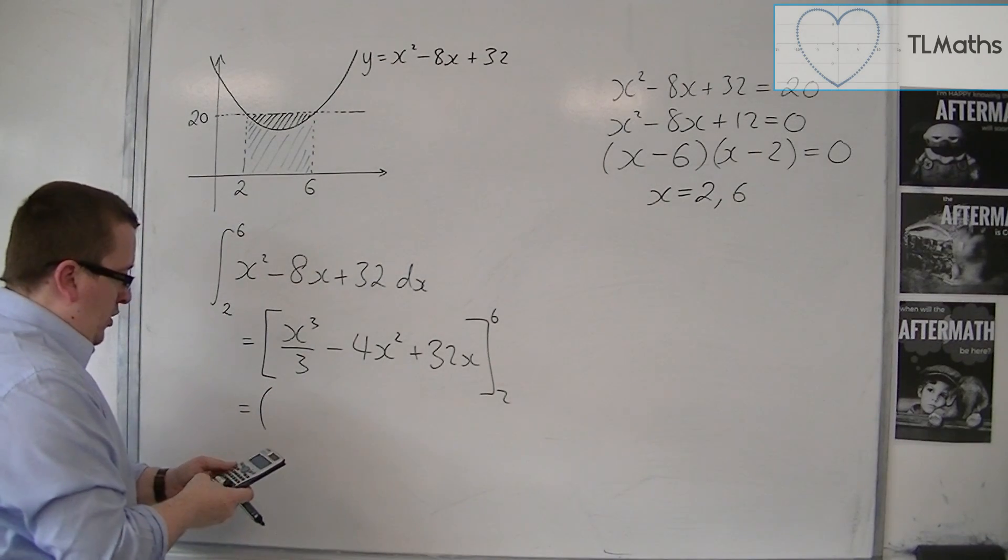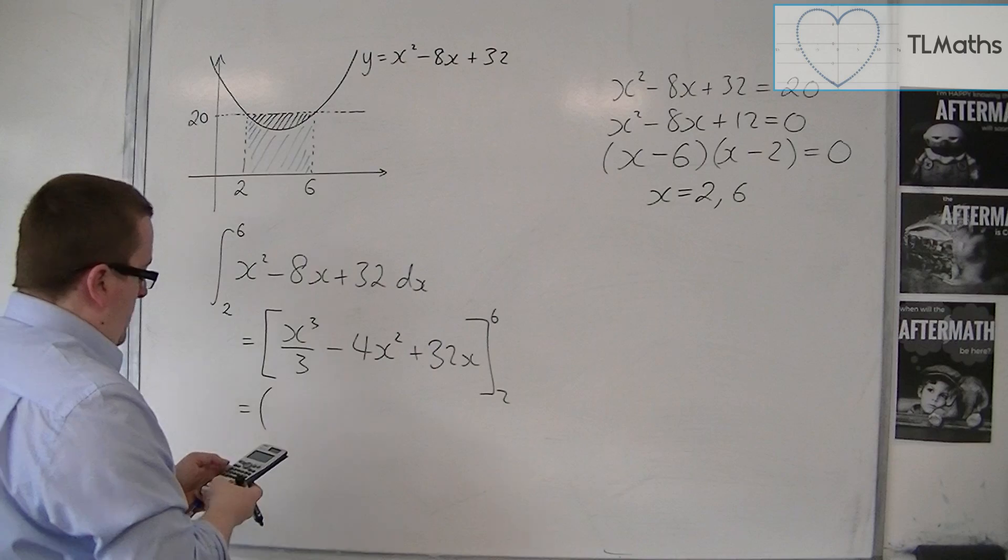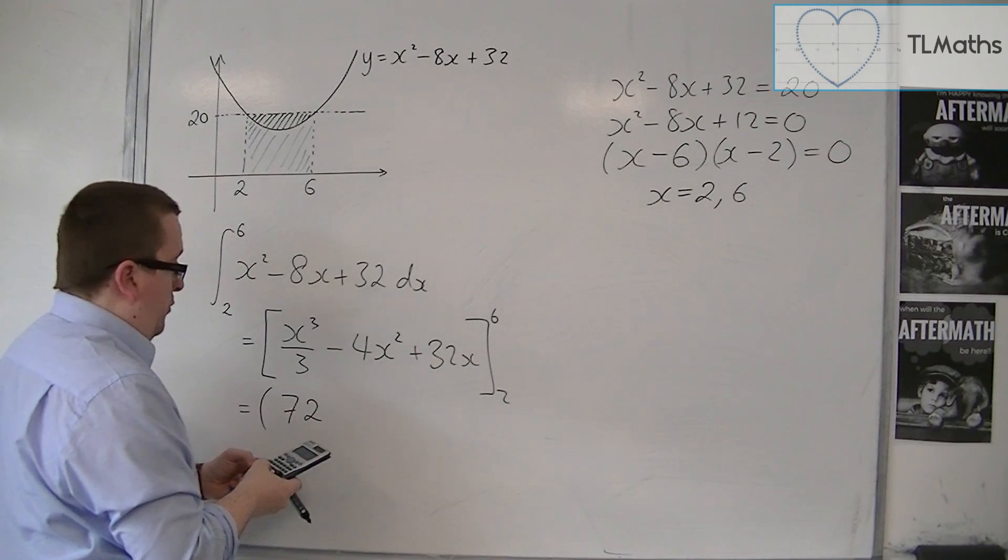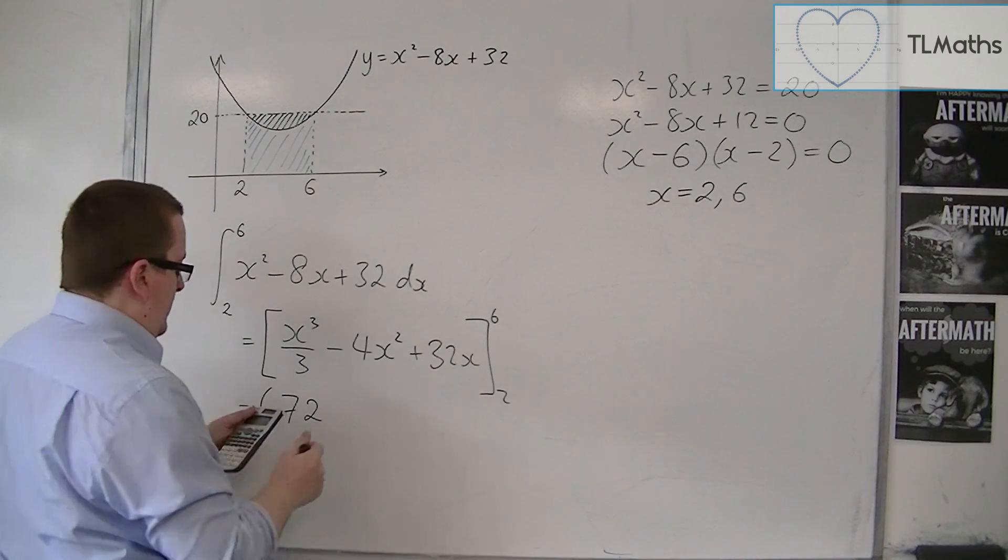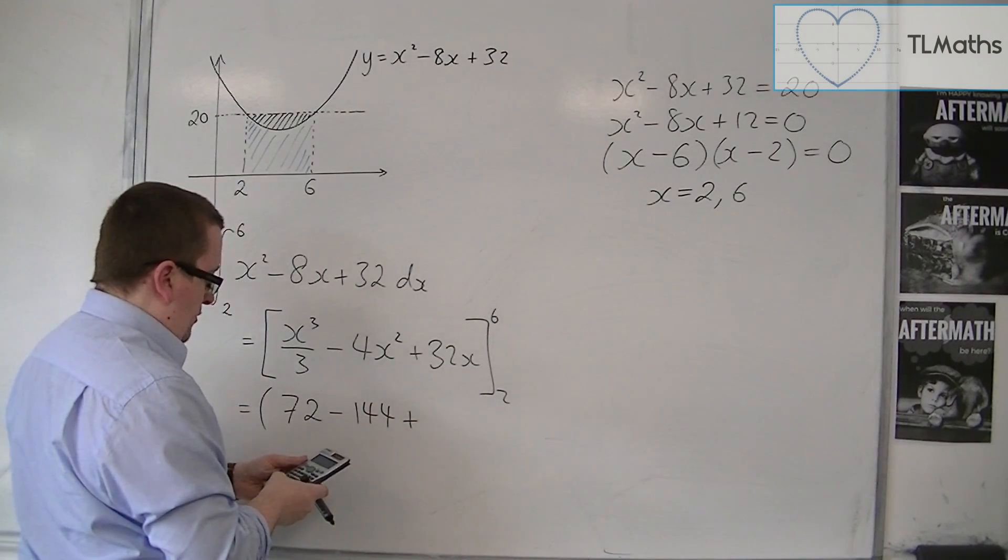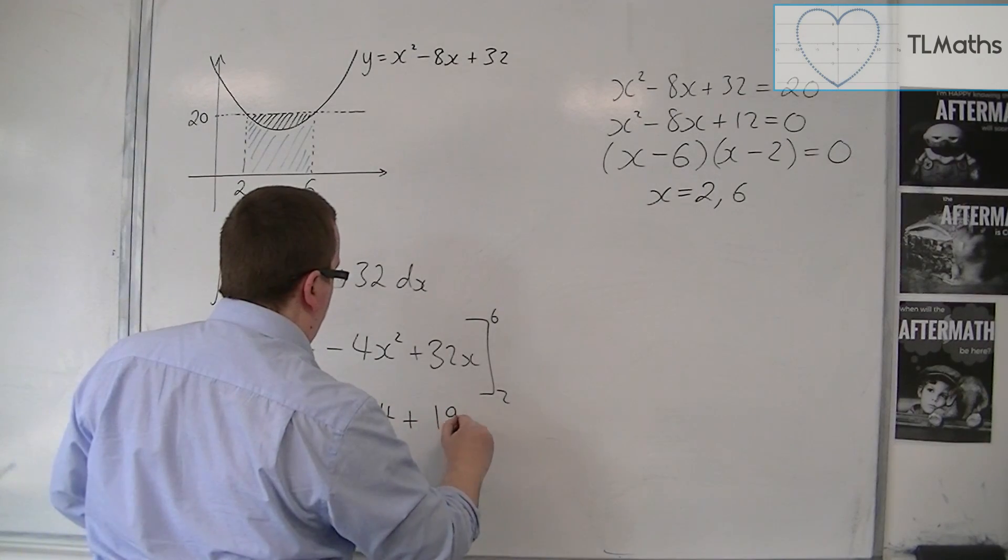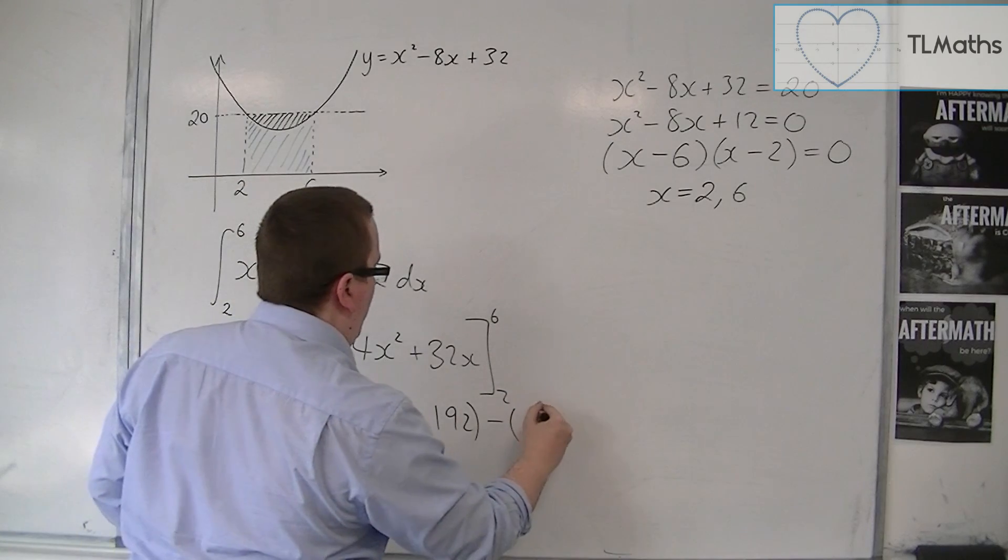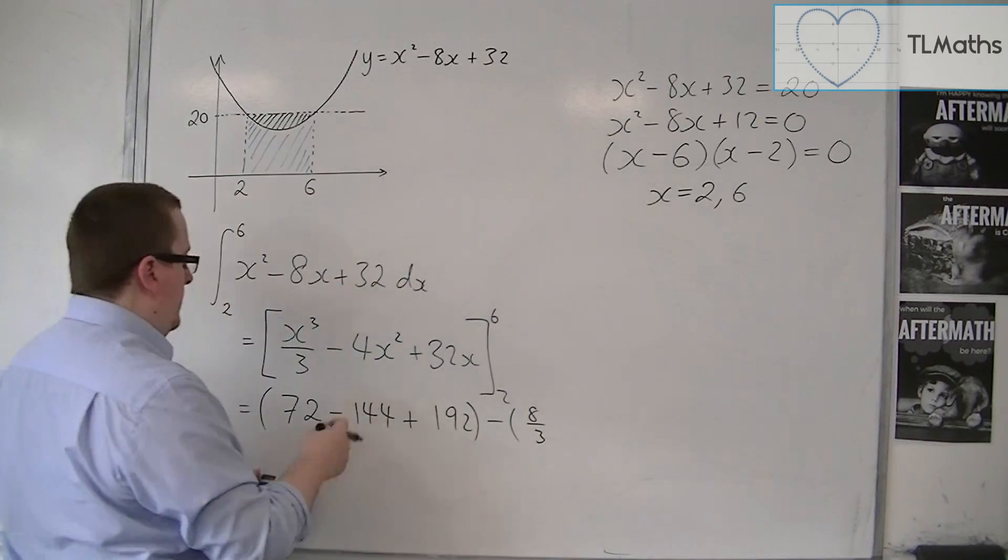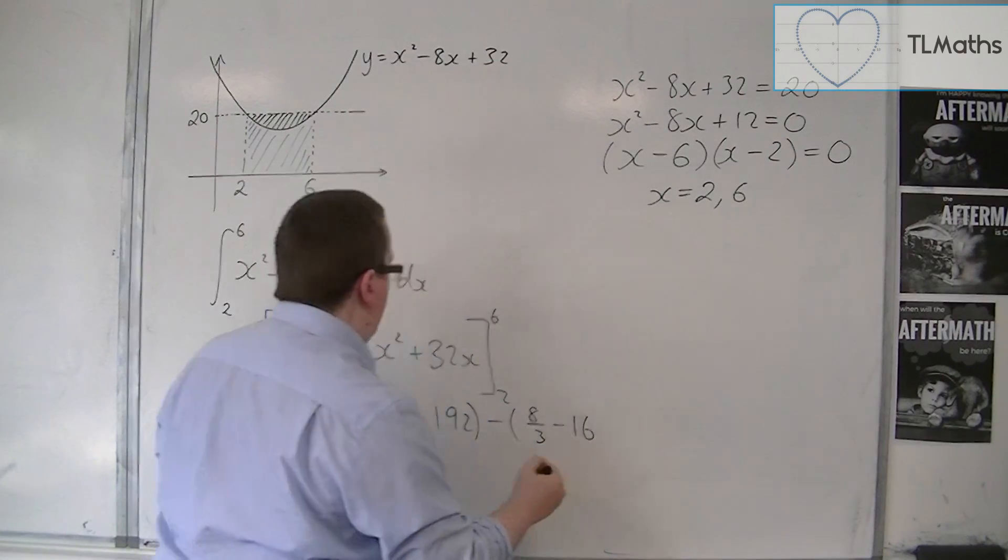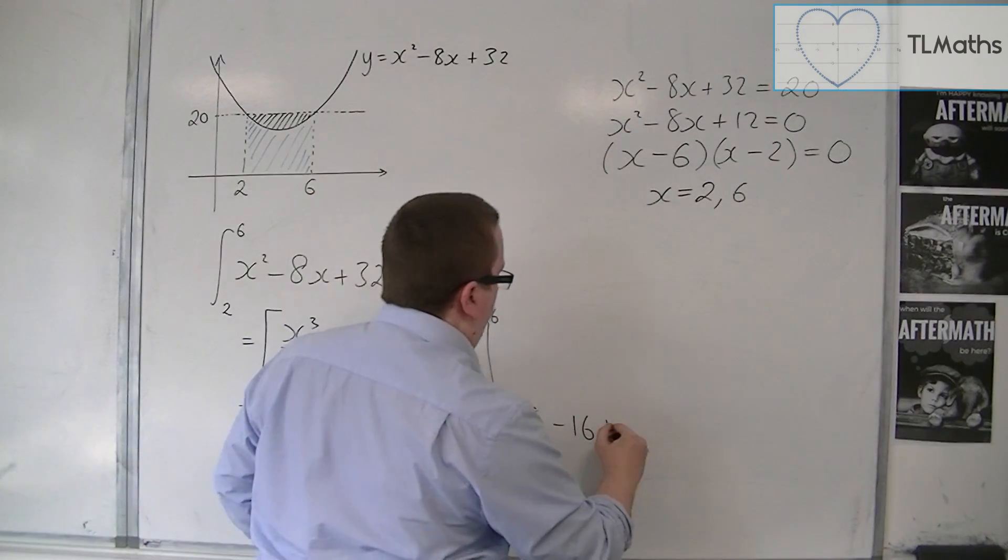So if we substitute in 6 first, we've got 6 cubed divided by 3, so 72. Then we've got 4 take away 6 squared, so take away 144, plus 32 times 6, so 192. Then take away 2 cubed over 3, so 8 thirds. 4 times 2 squared, so 16, so take away 16. And then 32 times 2, so 64.